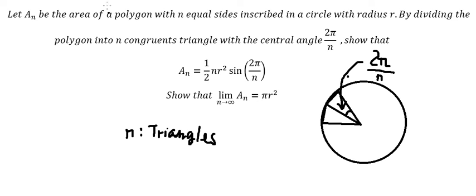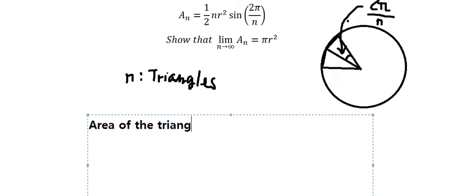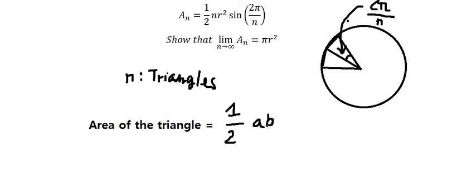We know that the formula to find the area of a triangle is one-half multiplied by a, b, and sine of alpha, where alpha is the angle between side a and side b.